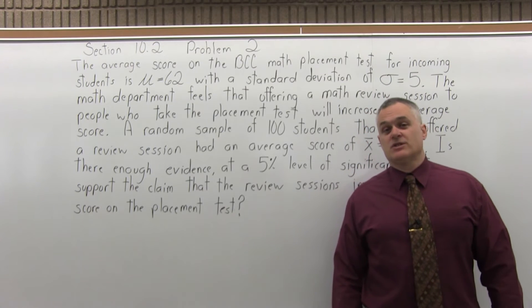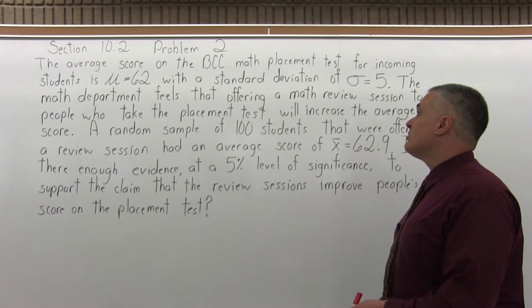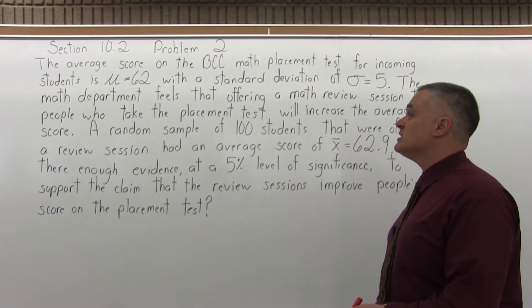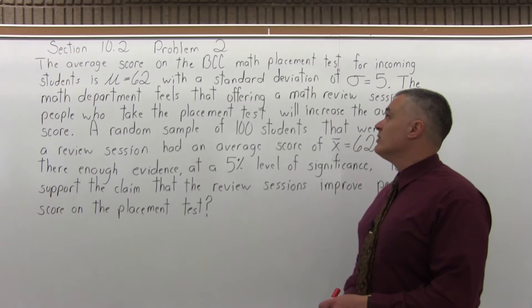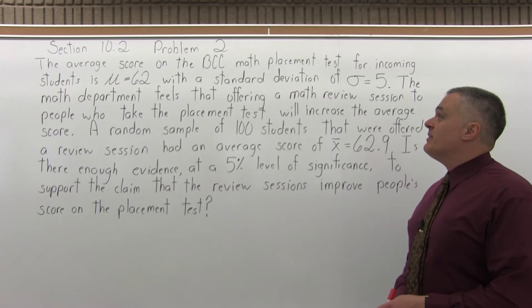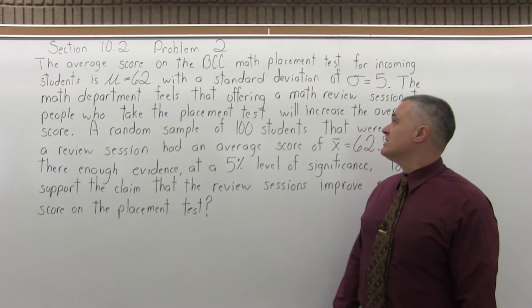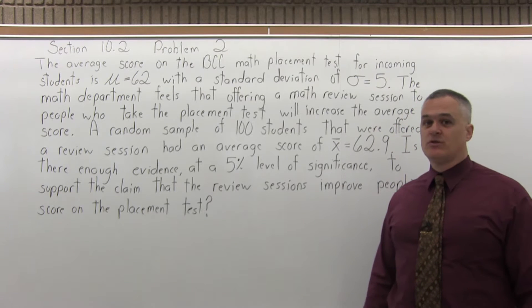This is Section 10.2, Problem 2. It says the average score on the BCC Math Placement Test for incoming students is mu equal to 62 with a standard deviation of sigma equal to 5. The math department feels that offering a math review session to people who take the placement test will increase the average score.